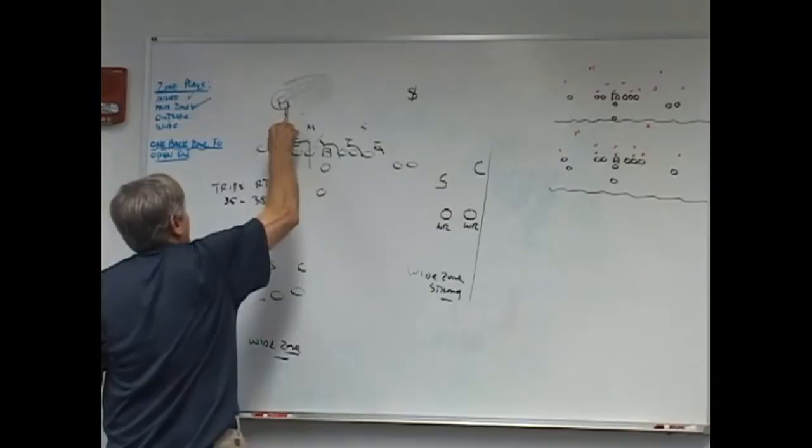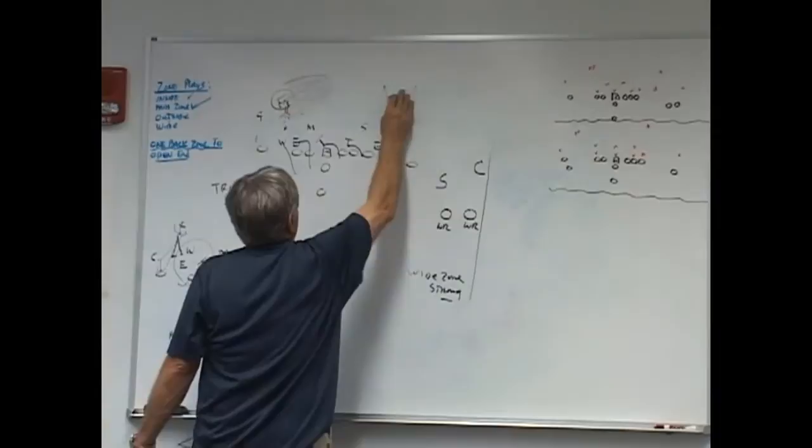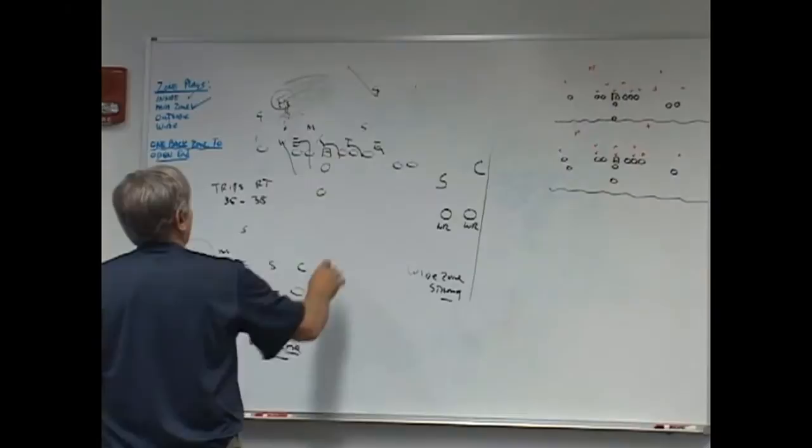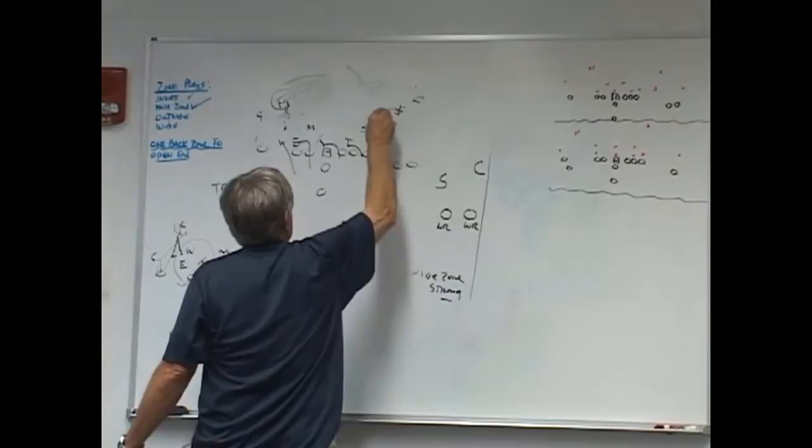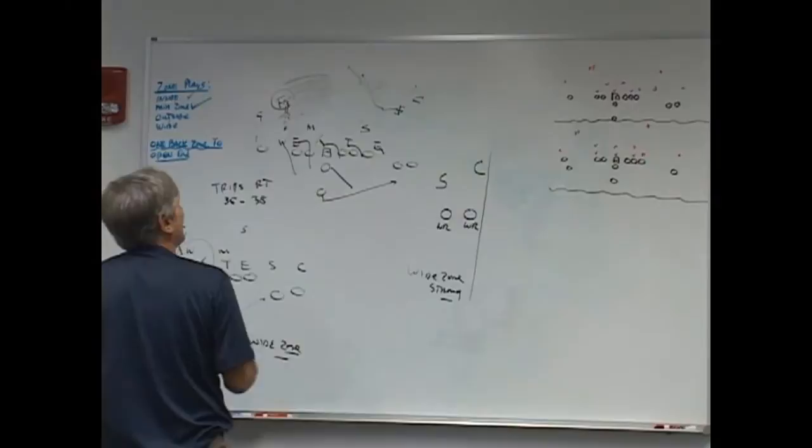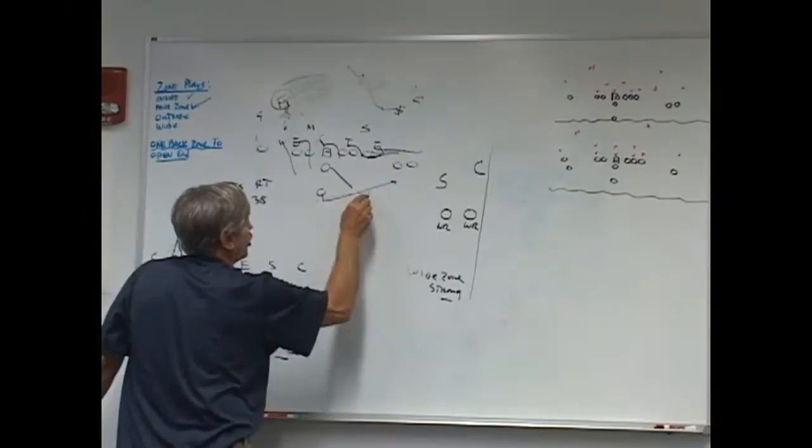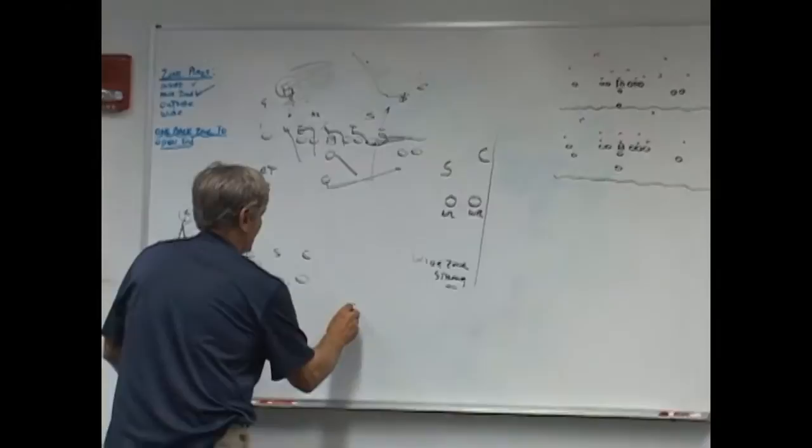Then the quarterback will see that the free safety's cheated down, they're going to blitz. The free safety's got to cover this zone, the strong safety's going back to the middle. The SAM defender is out here somewhere, I'm sorry, the SAM defender's here, the strong safety's over here, he's running back to the middle. Now we'll audible to the wide zone, he'll say red 88, red 88. And the bottom line is we'll run the wide zone, and he just runs that guy, and the ball will go up underneath them.